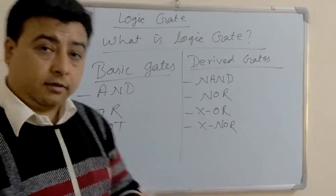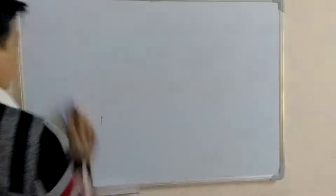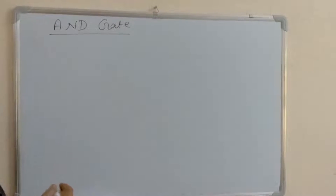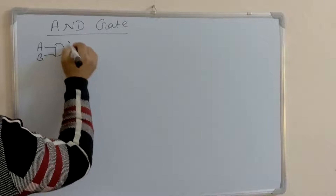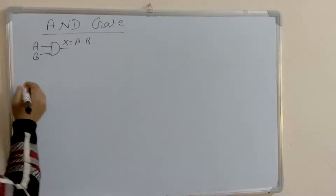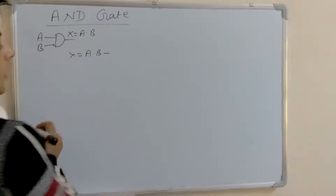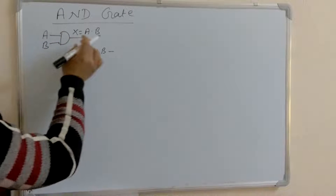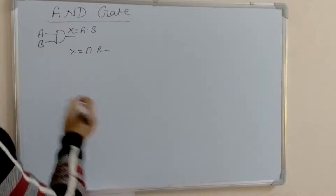Let's learn about AND gate. The graphical symbol of AND gate has inputs A and B. X is equal to A dot B. The algebraic expression is X equals A dot B. A and B are inputs. When we give A and B input, it produces a single output known as A dot B. This dot represents the AND operation.